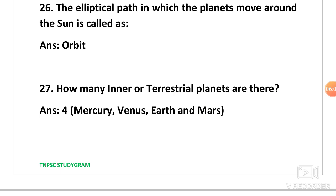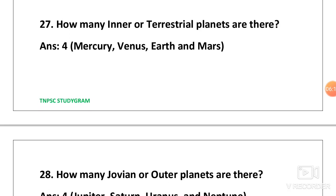Next one, the elliptical path in which the planets move around the sun is called as the orbit.